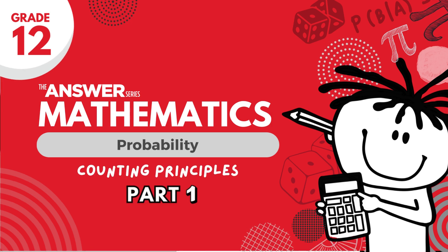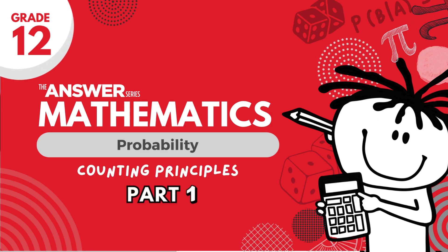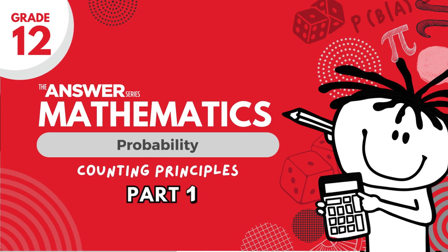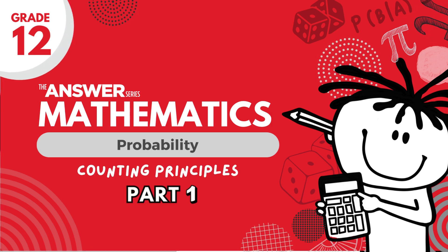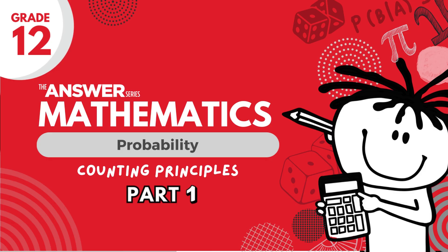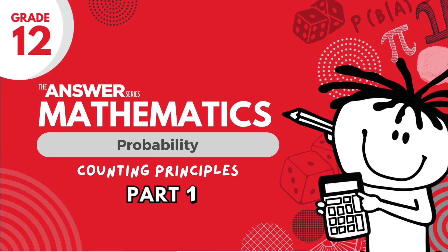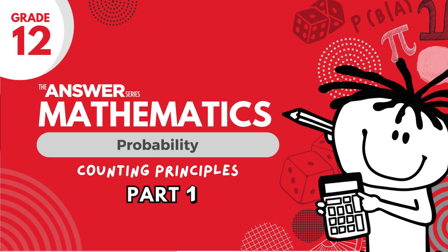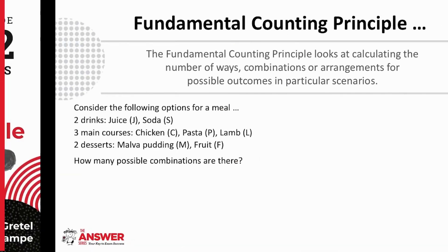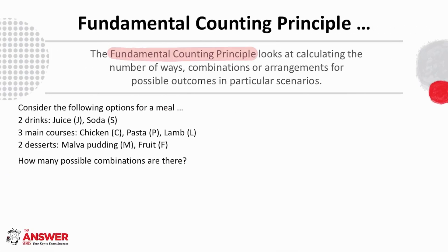Hi and welcome to this next video in our probability series. In this video we are going to step boldly into matric probability, looking at the fundamental counting principle. The fundamental counting principle looks at calculating the number of ways, combinations or arrangements for possible outcomes in particular scenarios.